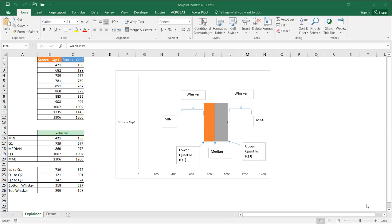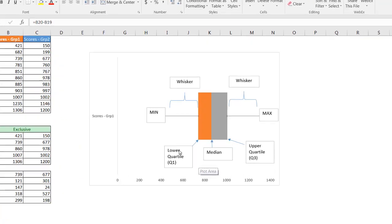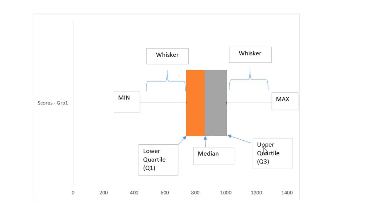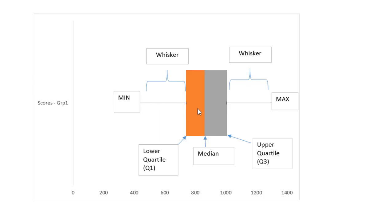In this video I'm going to show you how to create a horizontal box plot. A box plot is commonly used as a statistical visualization tool to get an idea of where a range of data sits. You can see we have a lower quartile Q1, a median, and an upper quartile Q3. We also have whiskers which show the range from the upper and lower quartiles to the minimum and maximum of the data, giving you an idea of how spread out the data is.